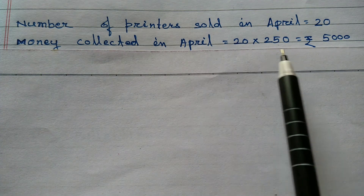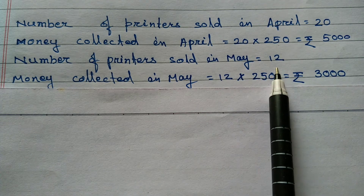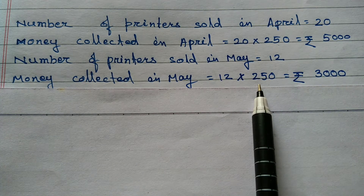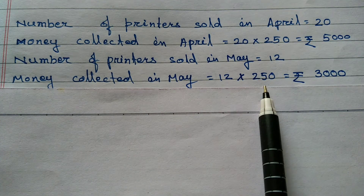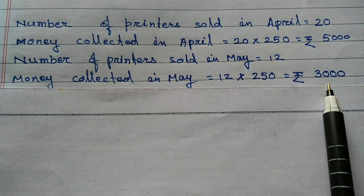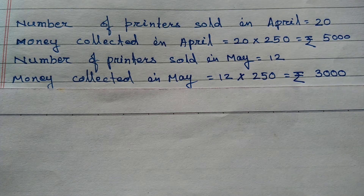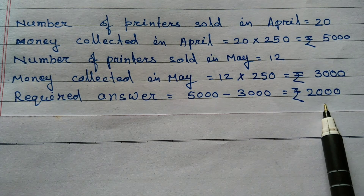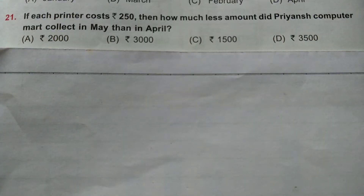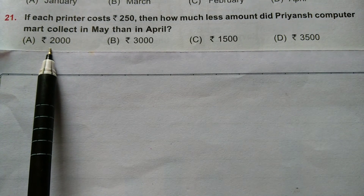Money collected in April: 5,000 rupees. Number of printers sold in May: 12. Each printer costs 250 rupees. Hence, money collected in May: 12 into 250, that is equal to 3,000 rupees. Clearly, money collected in April is more than money collected in May. Their difference: 5,000 minus 3,000, that is equal to 2,000. Hence, less money collected in May than April equals 2,000 rupees. Option A is correct.